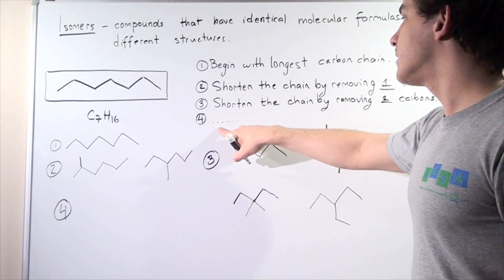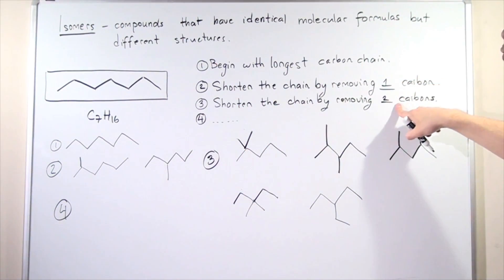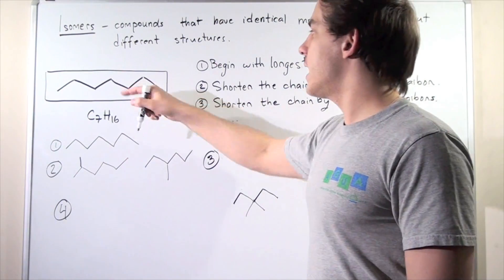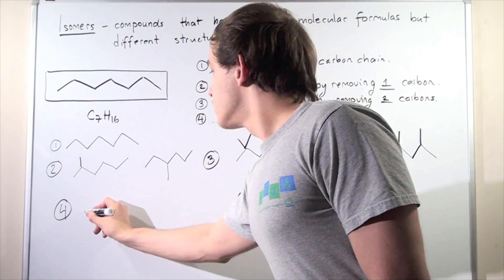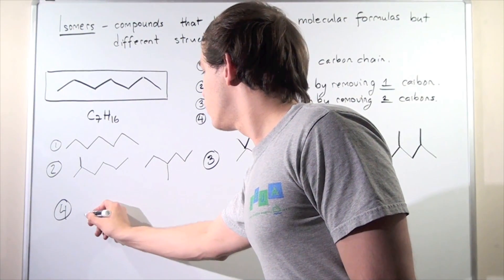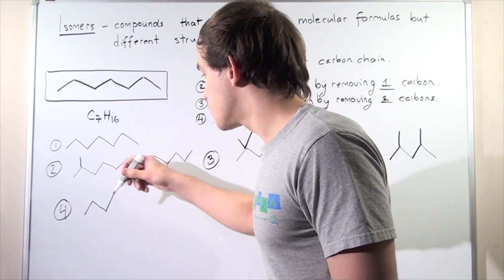In step four, we're simply removing not one or two, but three carbons from the end. So we're removing one, two, three. So we have one, two, three. And now we have three carbons at our disposal, three methyl groups.